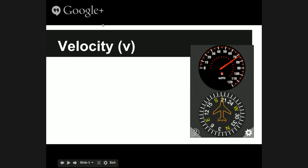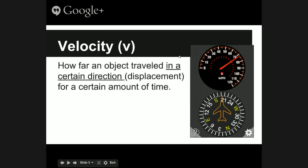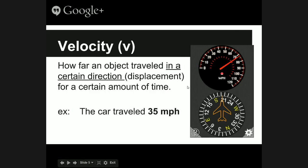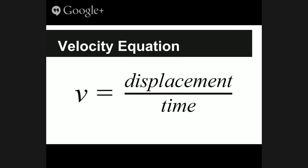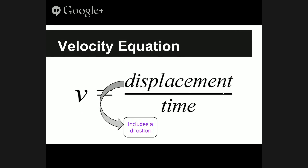Velocity is very similar to speed — in fact we designate velocity with a V as well. However, velocity is a little bit different: it describes how far an object traveled in a certain direction, or the displacement, for a certain amount of time. We're adding one more important piece, and that's the direction. For example, a car traveling 35 miles per hour is speed, but a car traveling 35 miles per hour north is velocity. The velocity equation is V equals displacement over time, where displacement is distance including a direction — both magnitude and direction — over time.